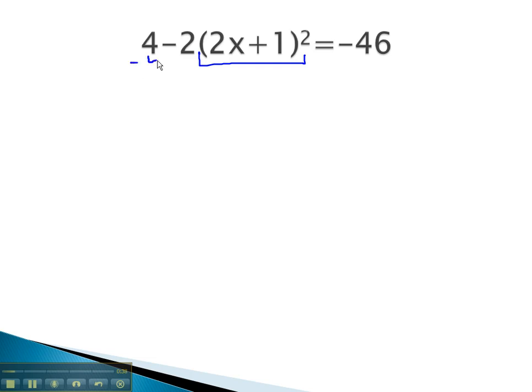To get rid of the 4, we must subtract 4 from both sides. This gives us -2(2x+1)² = -50.